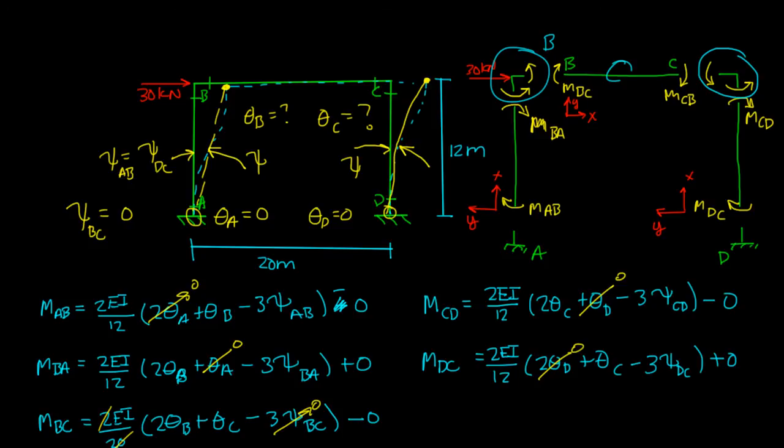See how many unknowns you have, and then figure out ways to get equations for them. Use those equations to get your unknowns and plug them back into your unknown moment equations to figure out what the moments are at the ends of the members. Okay, so I hope this helped. All right.